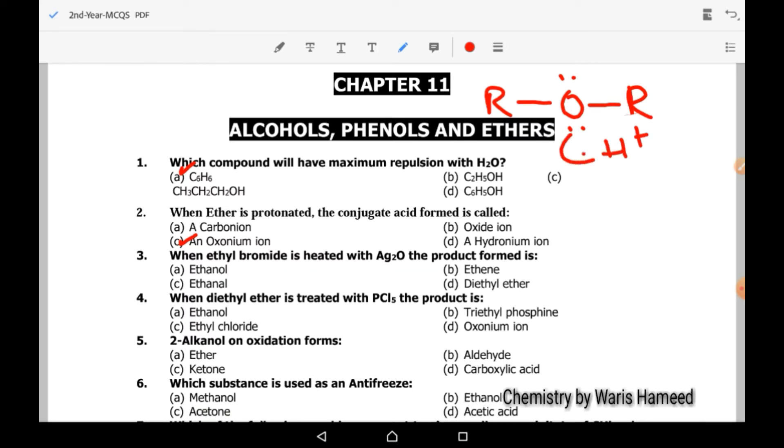When ethyl bromide is heated with silver oxide, the product formed is diethyl ether. When we react ethyl bromide with silver oxide, they form diethyl ether. So option D is correct.